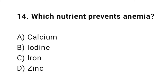Question number fourteen: which nutrient prevents anemia? The right answer is C — iron. Iron is needed for hemoglobin formation.